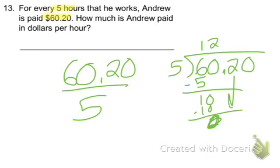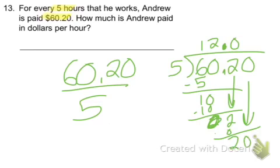Zero, bring down the two, bring up the decimal point — that's super important. Bring down the last zero, and five goes into 24 times.